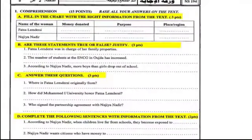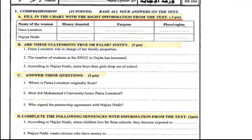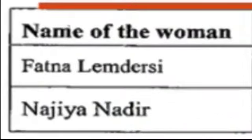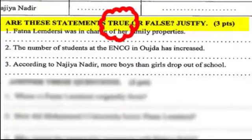This is the exam paper. As you can see, we have many questions: A, B, C, D, E, F, and so on. We start with question A: filling the chart with the right information from the text. As you can see, this is the chart — the table — and we have several categories: number one, name of the woman; number two, money donated; number three, purpose; number four, place and region.